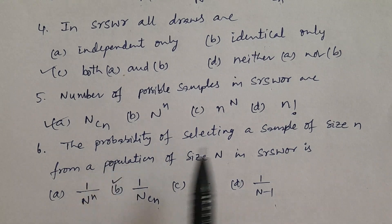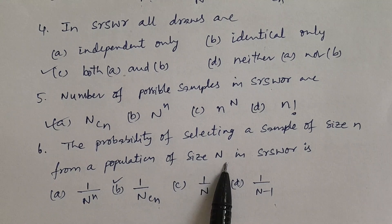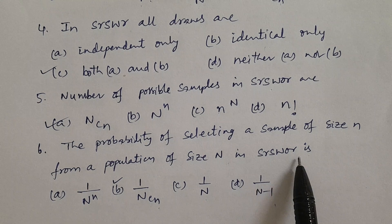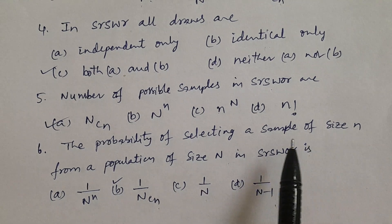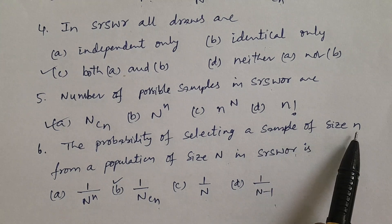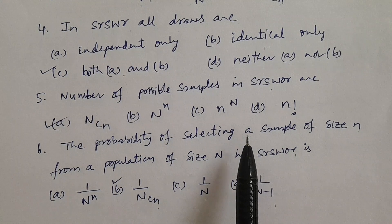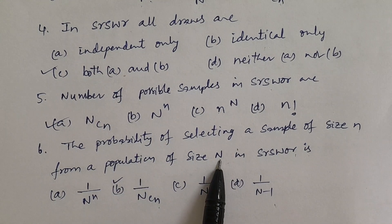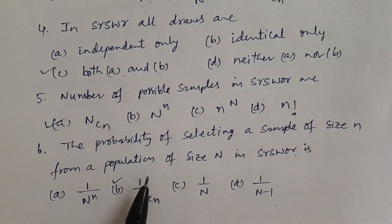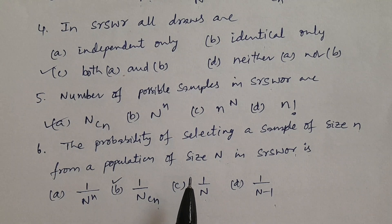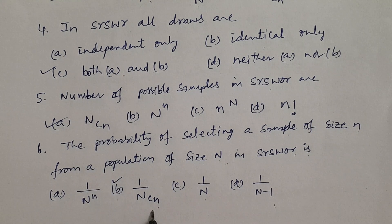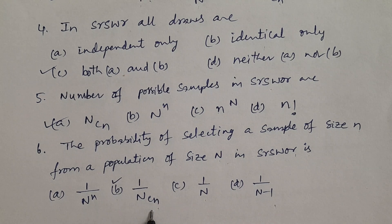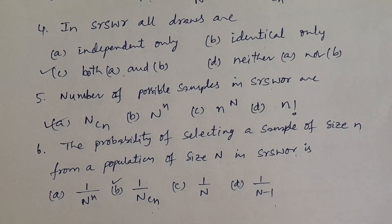The probability of selecting a sample in SRSWOR is 1 by capital N C small n. So 1 by capital N C small n is the answer. We will discuss some more questions in the next class. Thank you.